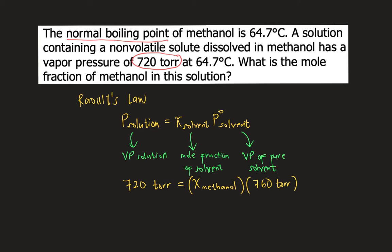If we want to solve for the mole fraction of methanol, just divide both sides by 760 torr. 760 torr will cancel on the right side, and the unit torr will cancel on the left side. The mole fraction of methanol equals 0.947, and mole fraction has no unit. This is the answer to the question.